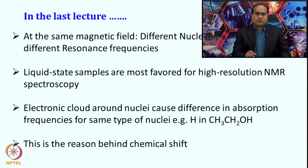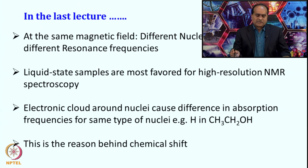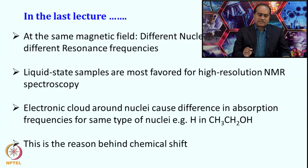We also looked at how liquid state samples are most favored for high resolution spectra, because liquid samples can tumble in solution. Because of this tumbling, lots of motional averaging happens and many of the isotropic interactions are averaged out, giving sharp lines. Solids generally give broad lines and gaseous samples have fewer spins to contribute, so signal intensity is less. Therefore, for high resolution NMR, liquid state samples are most favored.